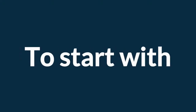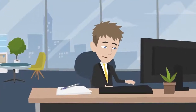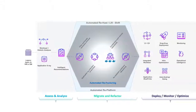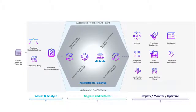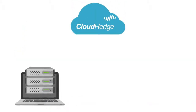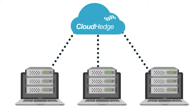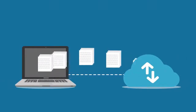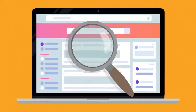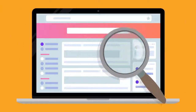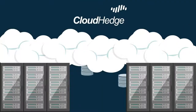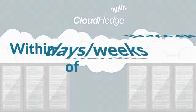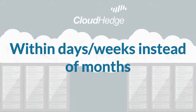To start with, the Discover module helps to analyze and classify workloads with a recommendation report for cloud enablement. The Transform module automates re-hosting or refactoring of workloads, whereas the Cruise module enables application deployment on cloud of choice and monitors them on an ongoing basis. The trio enables automation of migrating applications within days or weeks, instead of months.